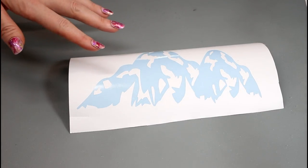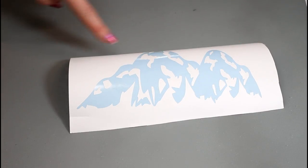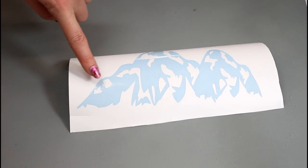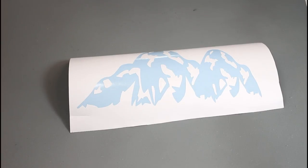So once the stencil is completely weeded out, you can see that we've got our design that we've weeded out and we're going to transfer it the same way we usually would. So we're going to place our transfer tape over, we're going to scrape from the front and then the back, and then we're going to transfer it onto our slate.